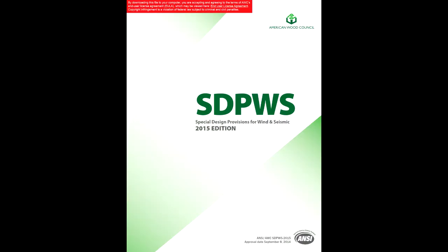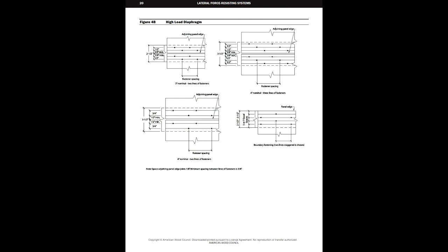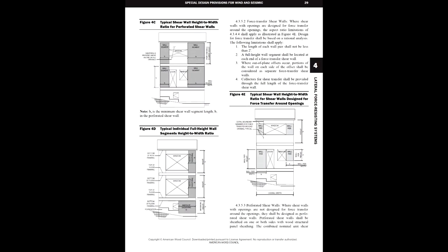The final component of the AWC's wood design package is the Special Design Provisions for Wind and Seismic, or the SDPWS. As the name implies, the SDPWS has special provisions for wind and seismic loading — it is primarily a resource for lateral load provisions. We will refer to it in depth later in this video series when we learn how to design things like plywood shear walls, floor diaphragms, etc. For now, just know that this volume is primarily for the lateral force-resisting system design.